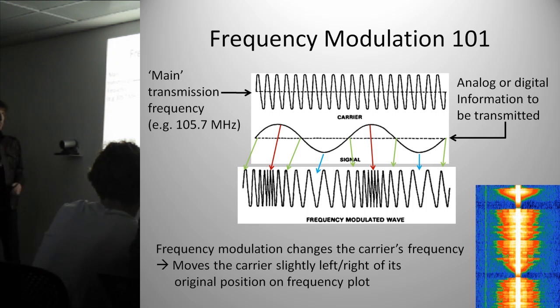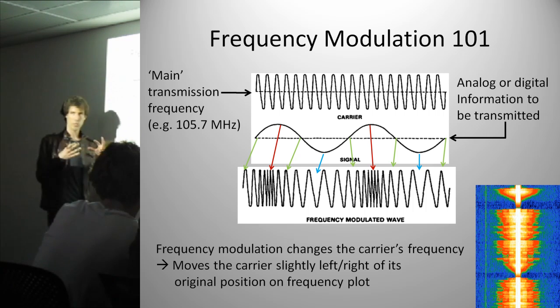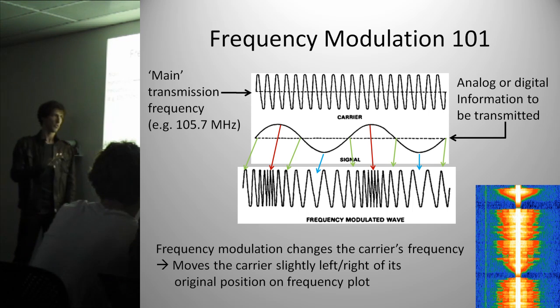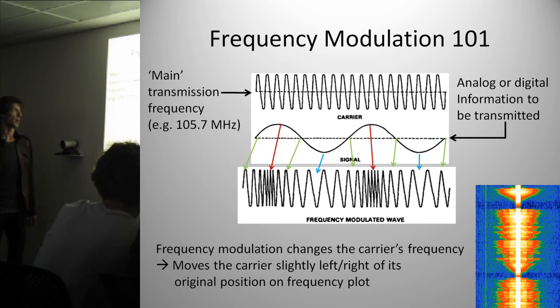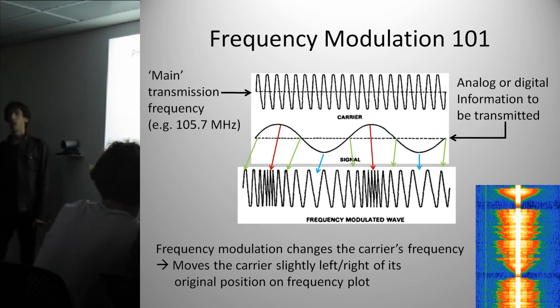It essentially means that usually you would have the carrier here directly in the center line, but when you put information on there, it moves it left and right, and that's the actual modulation part of it. Why is that important? Well, we need to know about that to create a Doppler direction-finding system. So first, I'm going to quickly talk about physically rotated antennas.